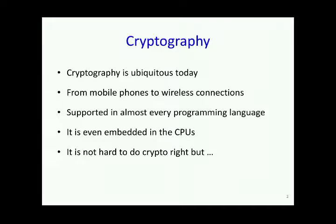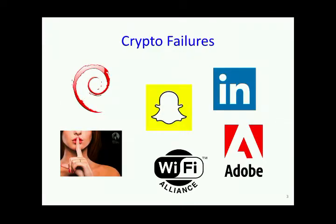Right now, cryptography functions like AES are part of the CPU itself — embedded in your hardware chips, including the ones in your laptop and mobile phone. It's really not hard to do cryptography the right way, at least in terms of programming. But you still see big mistakes: Debian had a problem in the random number generator which made secrets vulnerable, and companies like LinkedIn, Adobe, and Ashley Madison stored passwords in wrong ways.